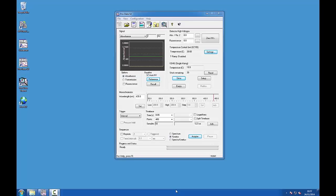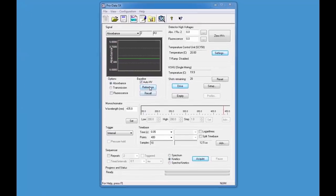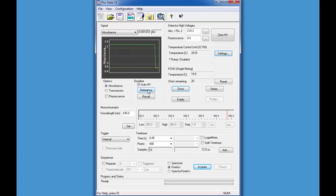For most experiments we want the gain to be optimized automatically, and we therefore tend to keep the auto HV button checked and then press reference. A high voltage that optimizes the recorded signal will automatically be set depending on the amount of light that is hitting the detector.